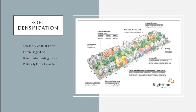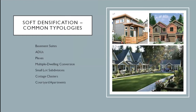These housing types blend more contextually into the existing built fabric of established neighborhoods. The slide shows examples of the mix of housing types associated with soft densification or missing middle, illustrating how they can be carefully woven into the fabric of existing lower-density neighborhoods without causing an abrupt change in scale.